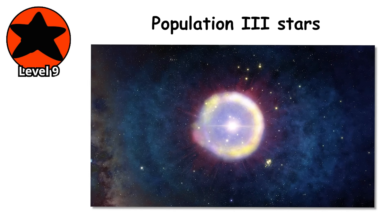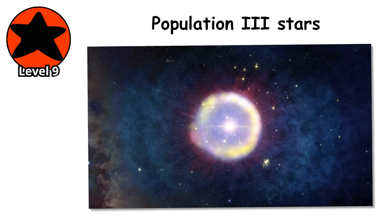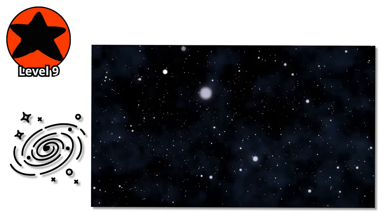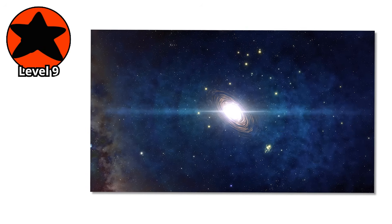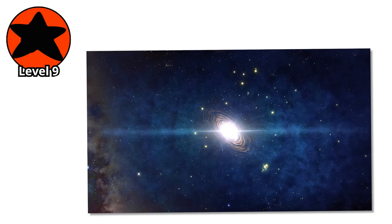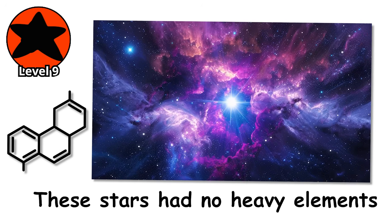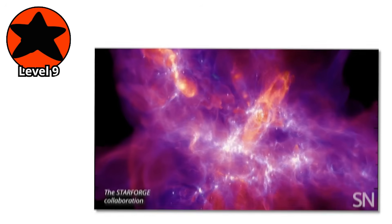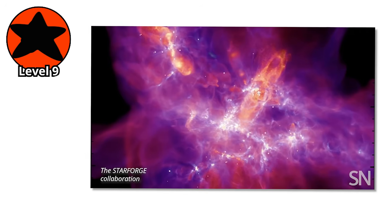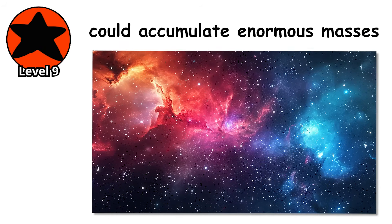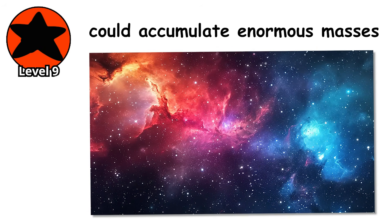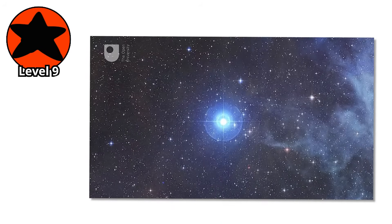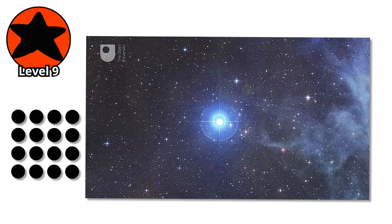Population 3 stars. The very first stars that ever existed. They formed in a universe that had never seen starlight before, in conditions so different from today that they could grow to sizes we can barely imagine. These stars had no heavy elements because none existed yet. The Big Bang produced only hydrogen, helium, and trace amounts of lithium. Without heavier elements to help cool collapsing gas clouds, these primordial stars could accumulate enormous masses before igniting fusion. Current models suggest they ranged from 100 to 1,000 solar masses, giants that dwarf even the most massive stars we see today.